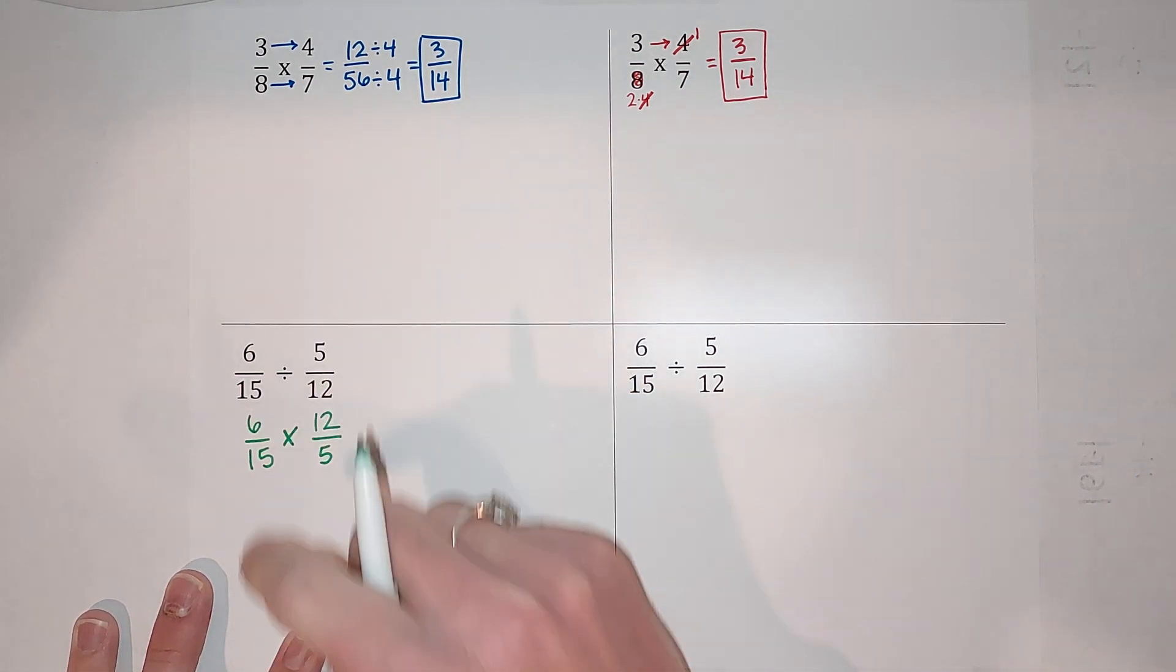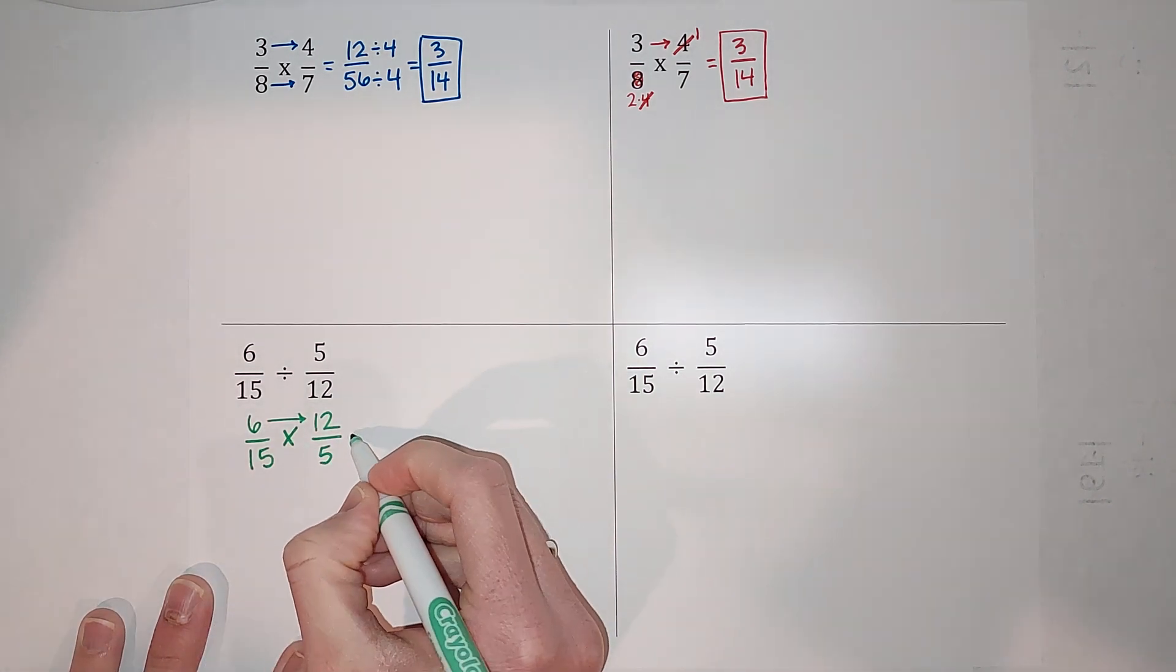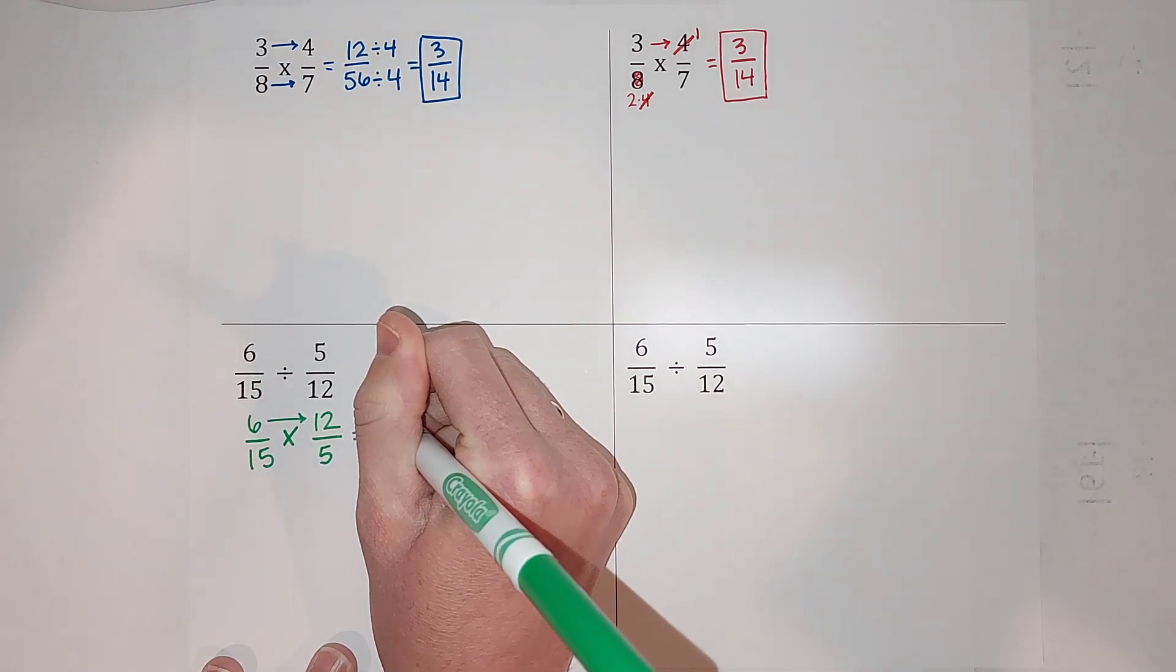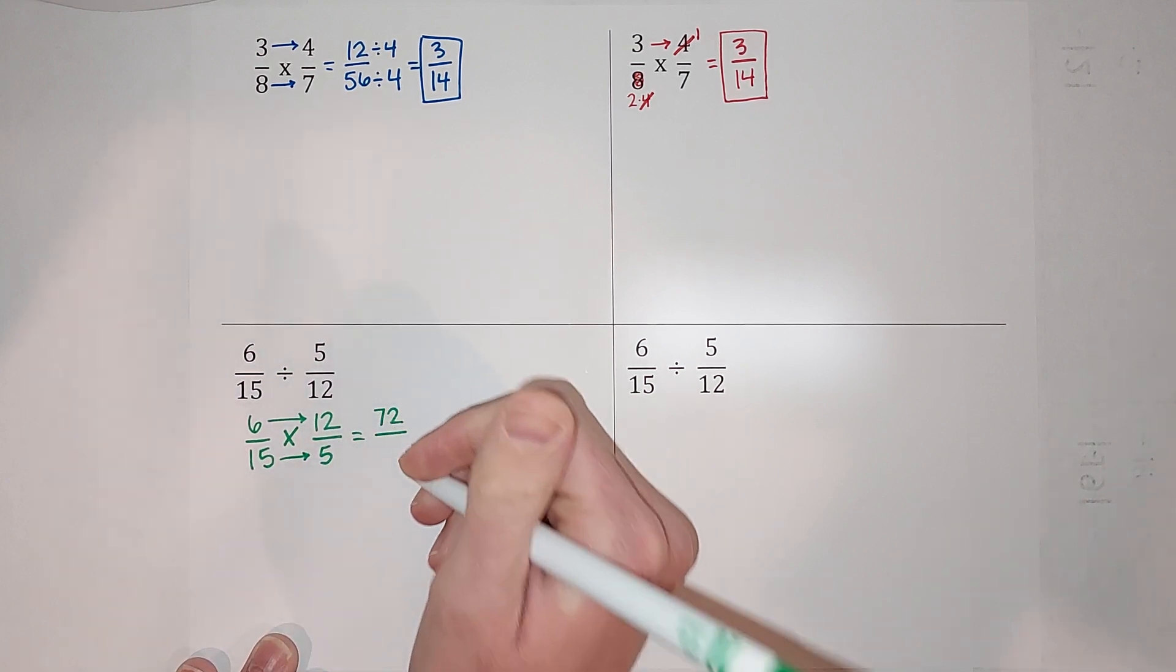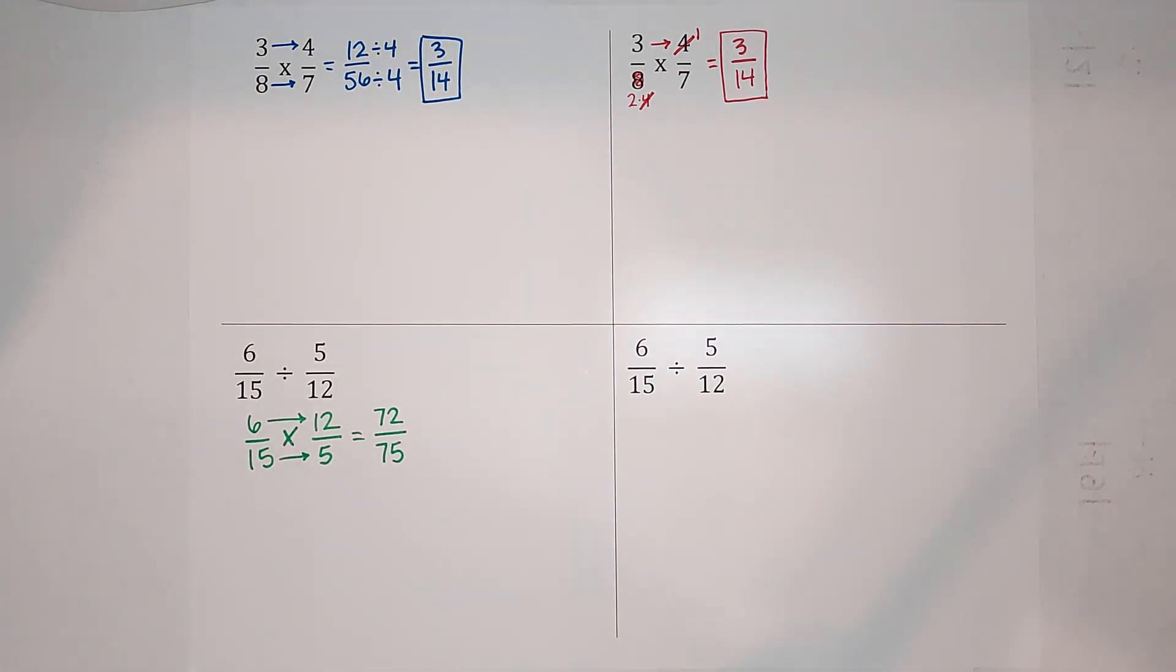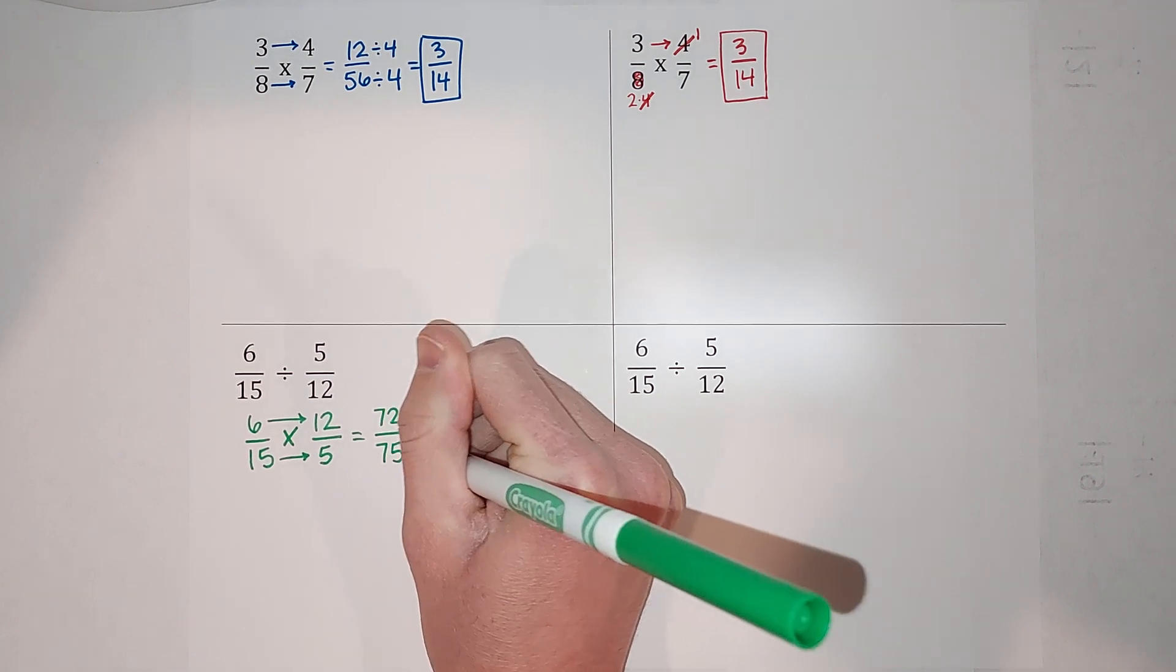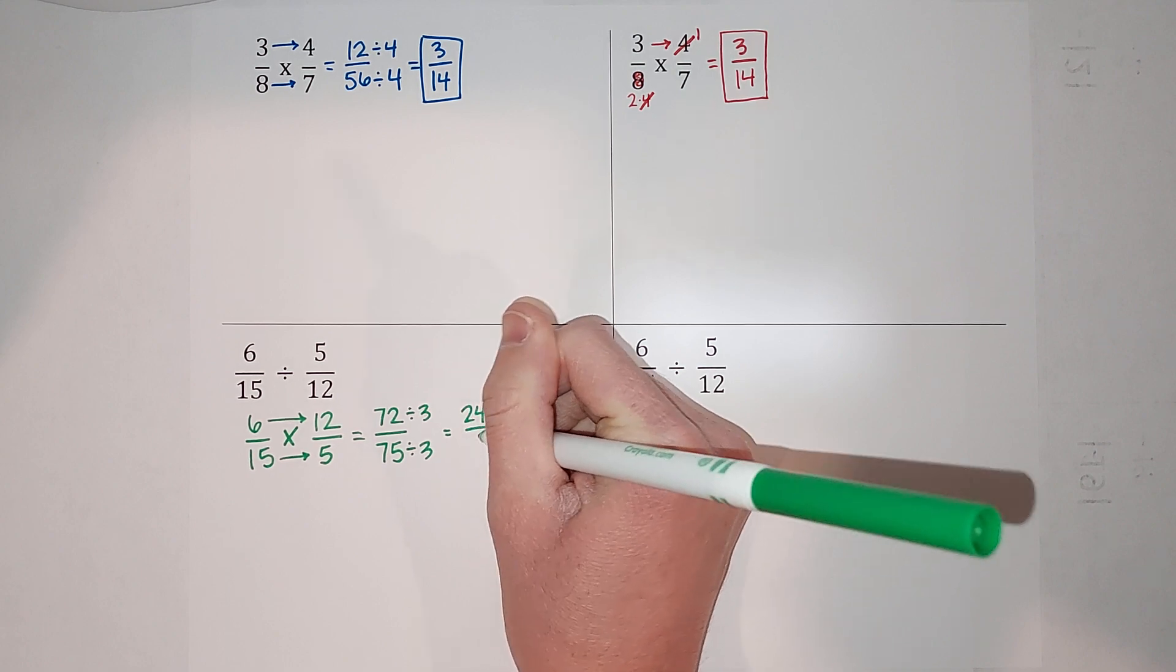Just like we did up here, straight across. This time I'm going to just multiply and worry about simplifying after. 6 times 12 gives me 72 over 15 times 5 gives me 75. Now I need to simplify. So I notice that 3 goes into both 72 and 75, so I'm going to divide the top and the bottom by 3, and I end up with 24 twenty-fifths. Done.